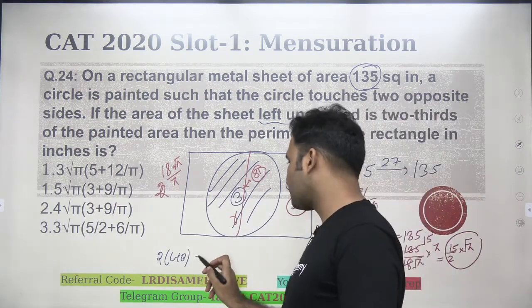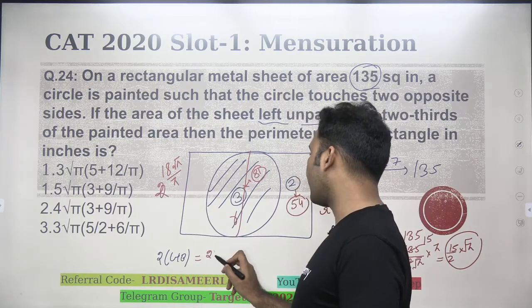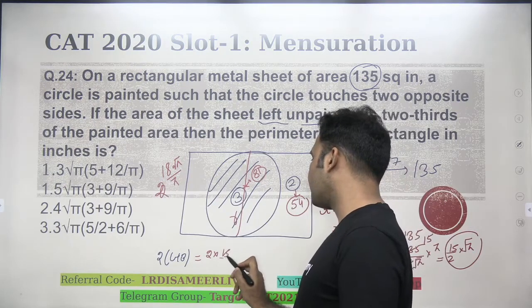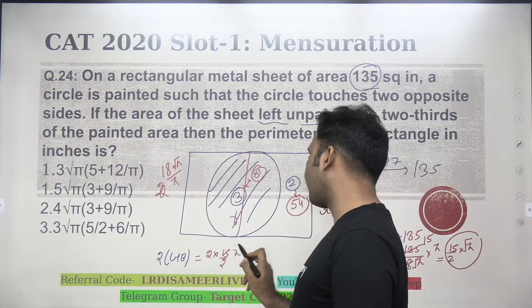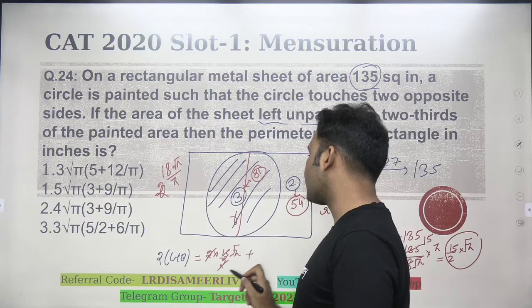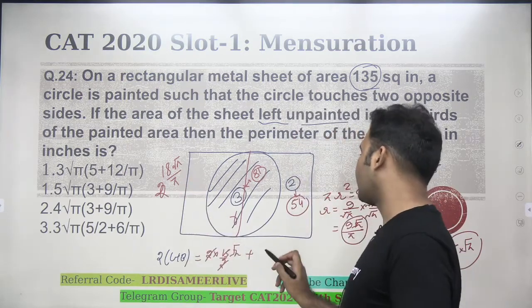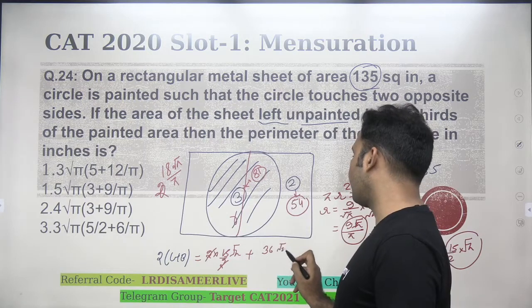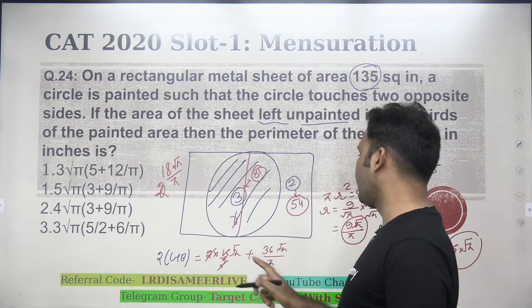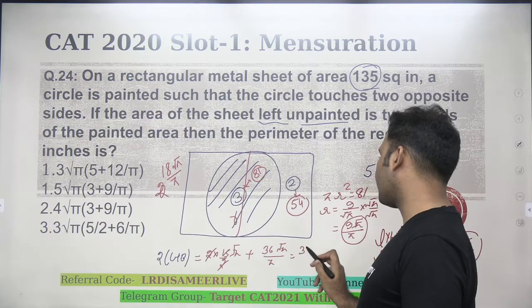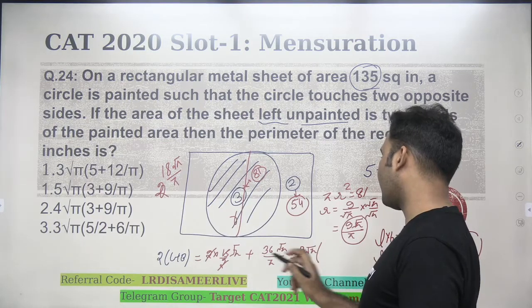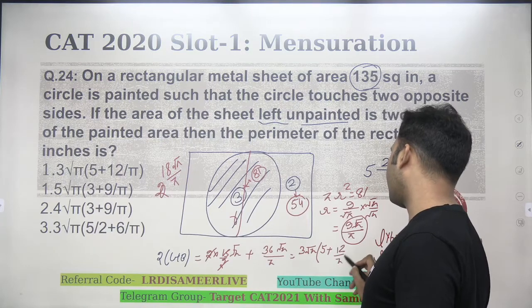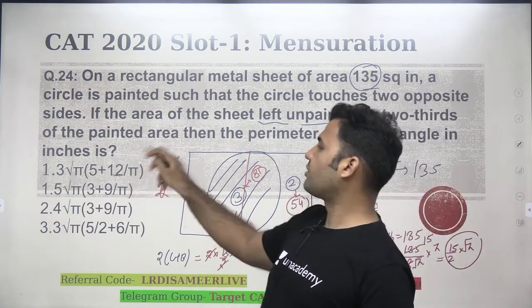Now that's it, perimeter is what we are supposed to find out, 2 times of L. What is L? L is 15 by 2 root pi, 2 will get cancelled, plus 2 times of B, that is 36, 36 root pi upon pi. Now if I take 3 root pi common, I'll have 5 plus 12 upon pi, which is the perimeter, option number 1.